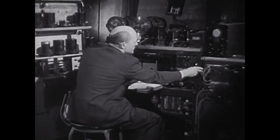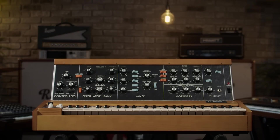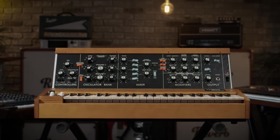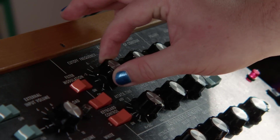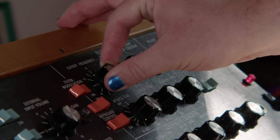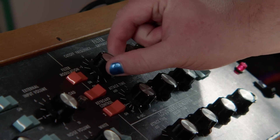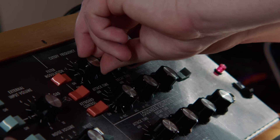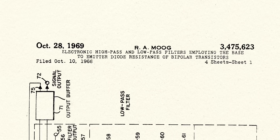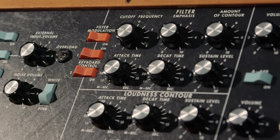That ladder topology was actually created by George Campbell of AT&T, but was utilized by Moog for his filter design. Moog's implementation of the ladder filter had a peculiar and charming effect on the sound, bringing a certain sense of warmth, breadth, and depth. This character distinguished it from other filter designs and earned the distinction of 'the Moog sound.' Moog applied for a patent on the Moog sound in 1967 and received one in 1969.